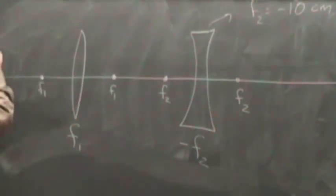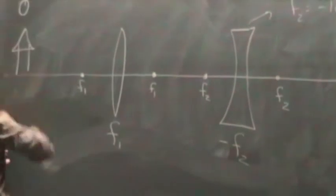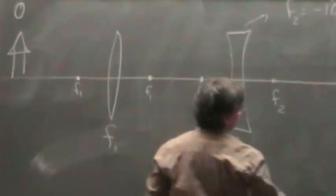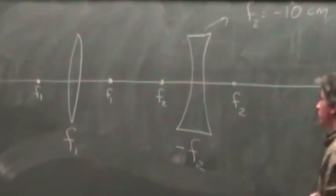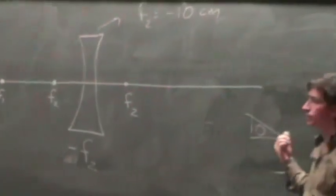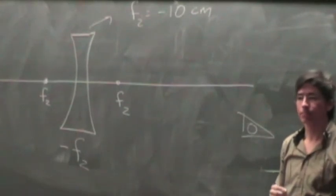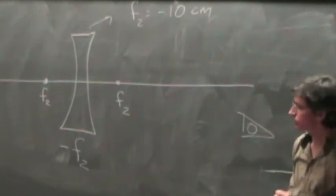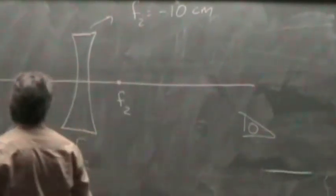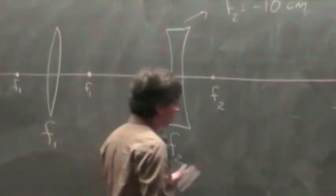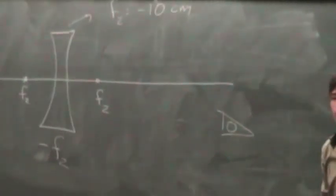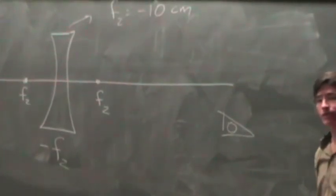So now you have an object, you place your object somewhere over here and you're trying to figure out where, for the observer that is on this side, where is the image, where is that object going to be? A lot of times it is obvious where the observer is, but sometimes there is a little bit of ambiguity there.